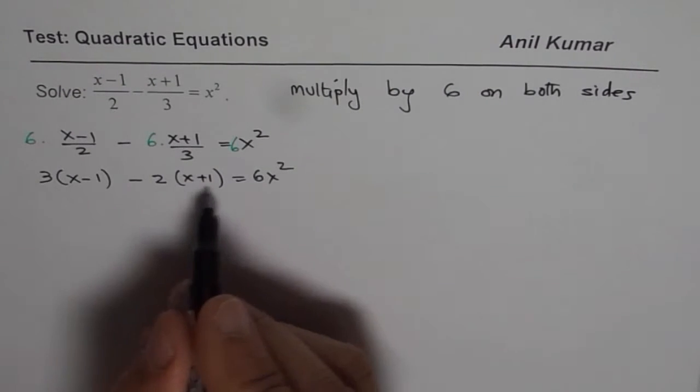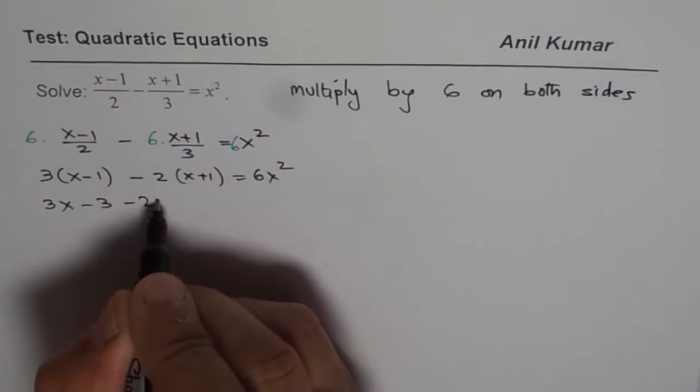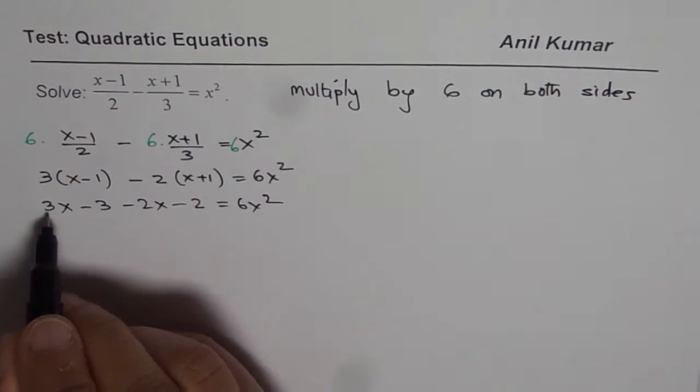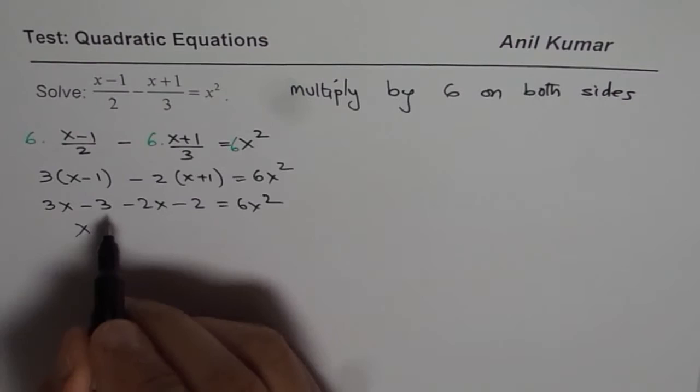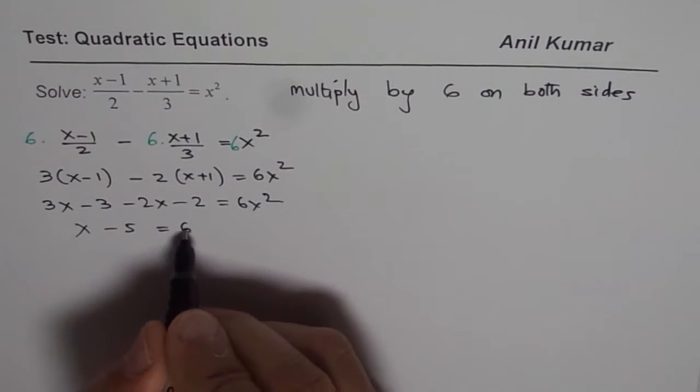Now let us expand and simplify. So we have 3x - 3 - 2x - 2 = 6x². 3x minus 2x is x, minus 3 minus 2 is minus 5, equals 6x².